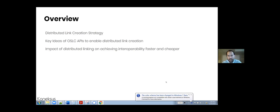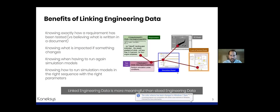I'll finish on a more controversial topic — the OSLC phase — and I'm looking forward to hearing your feedback. I personally think that a distributed link creation strategy can also change the way we look at standards and how we achieve interoperability. As we all know, ideally we want to achieve end-to-end traceability across different lifecycle phases and engineering disciplines. As a system engineer, I want to achieve a holistic system overview and understand how things are related.